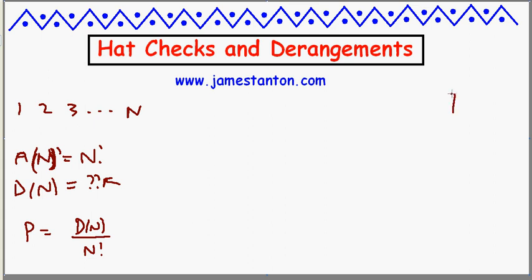To get a feel for it, let's see. D of 1. How many ways can you arrange one object so it doesn't return back to its start? Obviously impossible.